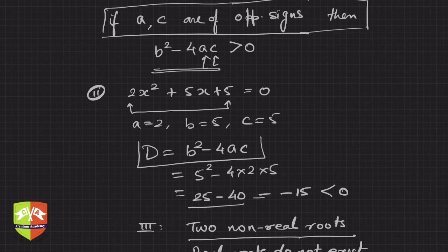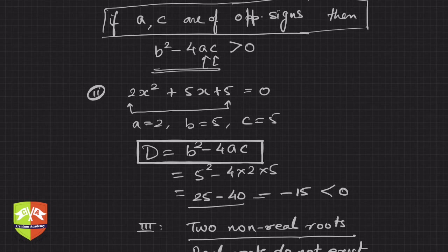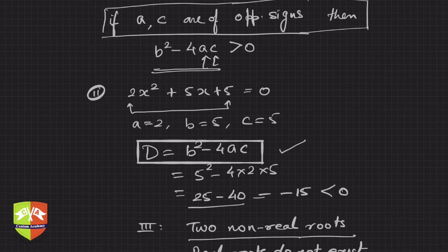This is very simple — you just need to remember the formula D = b² - 4ac. If D > 0, two distinct real roots; if D = 0, two equal real roots; if D < 0, non-real roots. That's how you solve these kinds of problems.